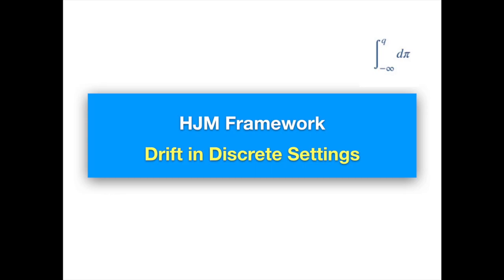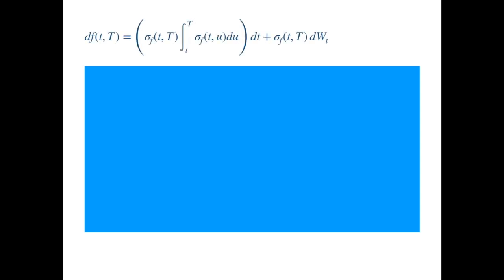We saw the HJM dynamics under the risk-neutral measure. The equation looks nice and simple, with the most space taken by the drift, which is not complicated either, because we know what an integral is.